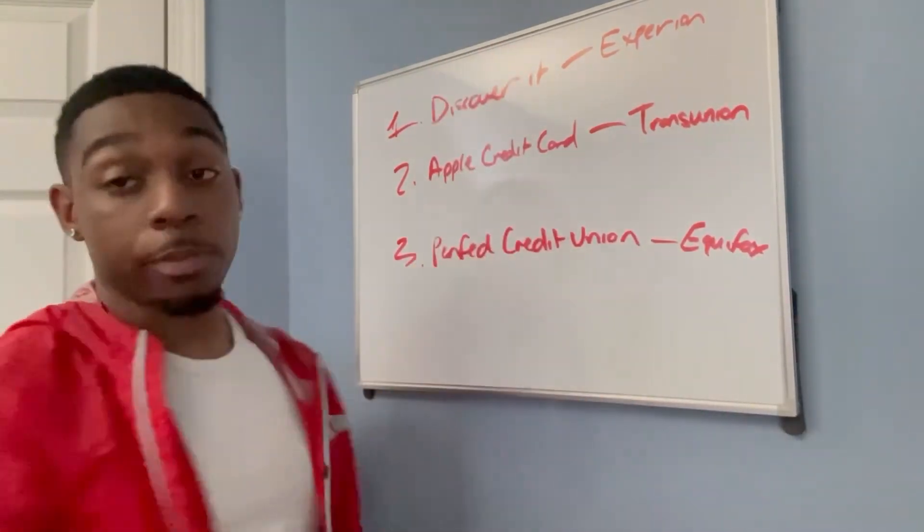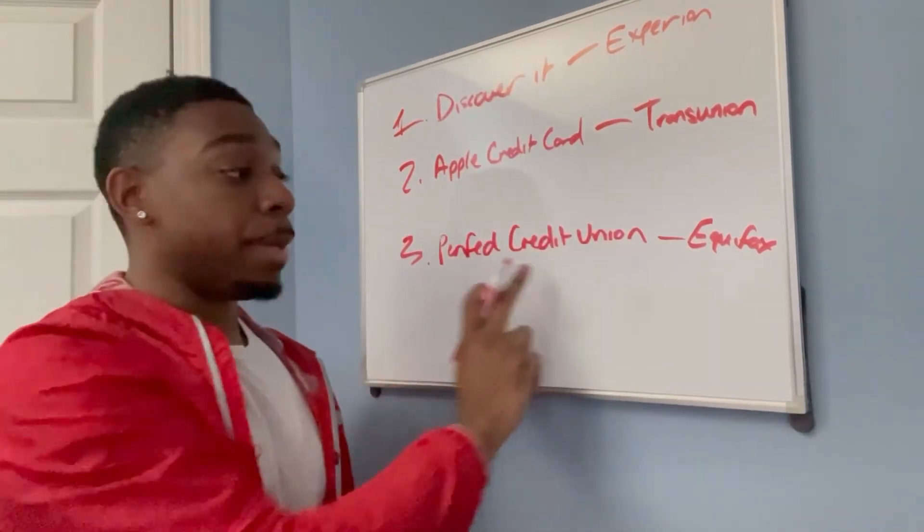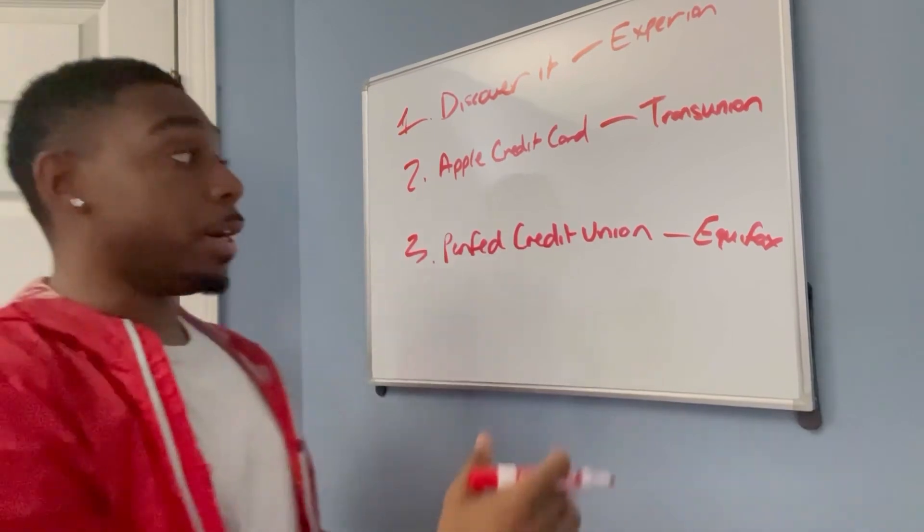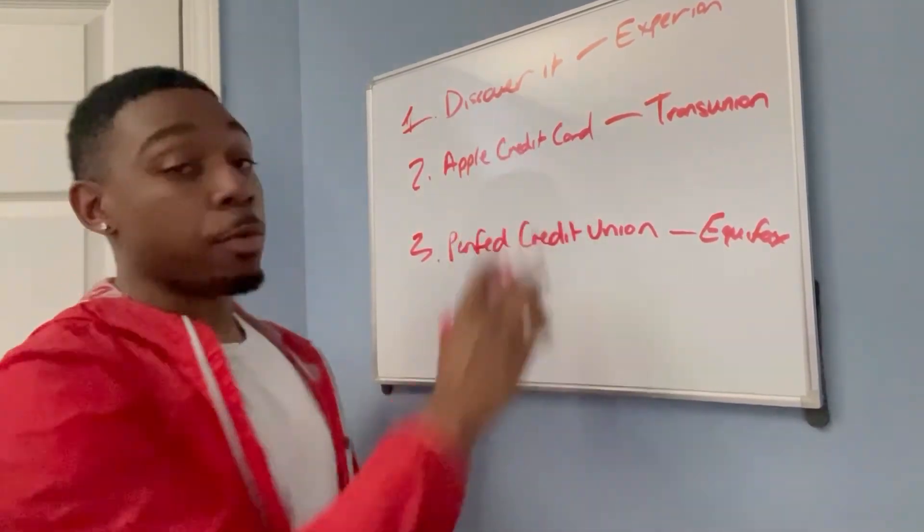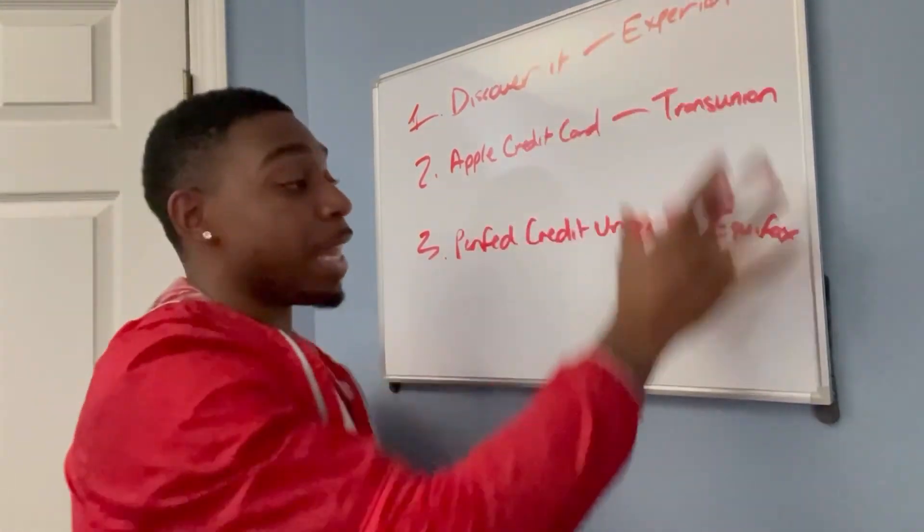You can do this lineup if you want. Discover, Apple, PenFed. But for somebody that's watching this that doesn't have an iPhone, you can swap out Apple for Navy Federal. They pull from TransUnion. So you get this lineup.